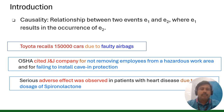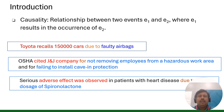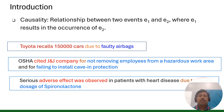For example: 'Toyota recalls 15,000 cars due to faulty airbags.' Another example: 'OSHA cited JNJ company for not removing employees from hazardous work areas and for failing to install caving protections.' These are examples of causal relationships.